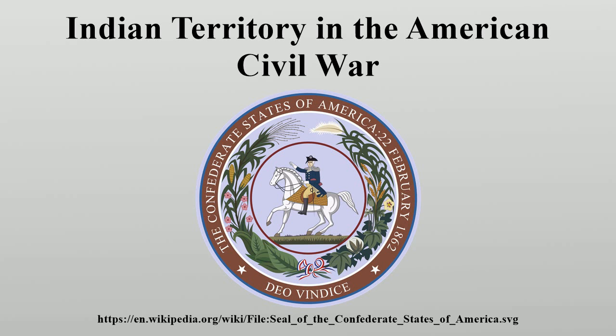The first battle in the territory occurred on November 19, 1861. Opoth Leahola rallied Indians to the Union Corps at Deep Fork. A total of 7,000 men, women, and children resided in his camp. A force of 1,400 Confederate soldiers under Colonel Douglas H. Cooper initiated the Battle of Round Mountain, but were repulsed after several waves, leading to a southern loss.